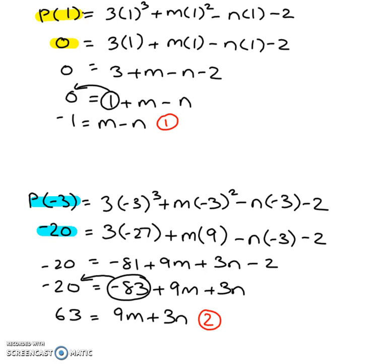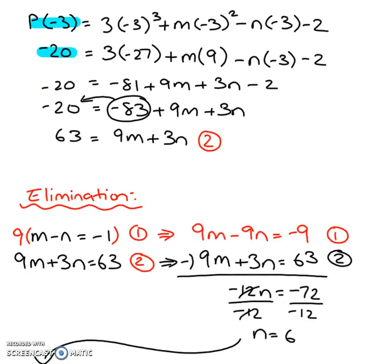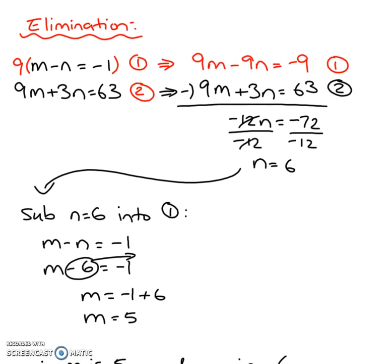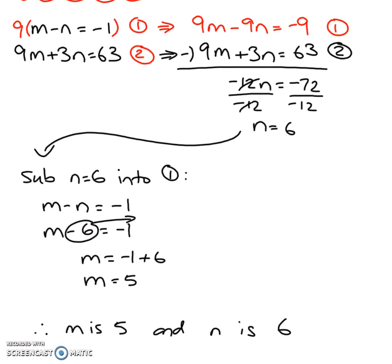Now I use substitution or elimination — my favorite is elimination. After elimination I got m equals 5 and n equals 6. So at the end of the tutorial I hope you have a better understanding of remainder theorem versus factor theorem. What we're going to look at next is how to create a more accurate picture of a graph that represents any of these polynomials.